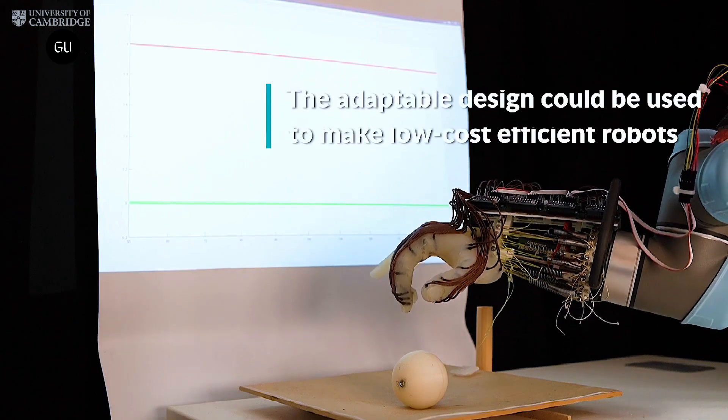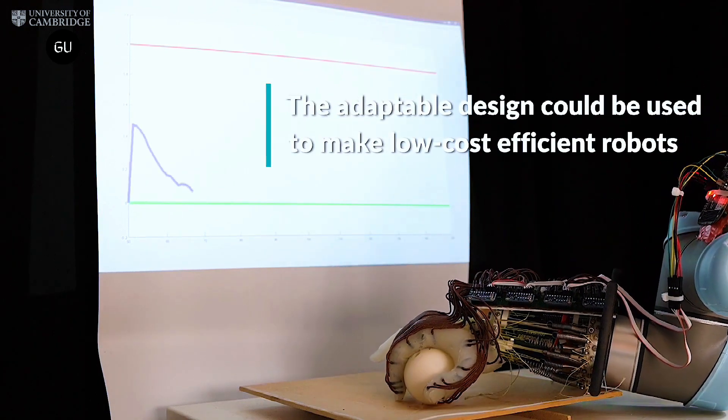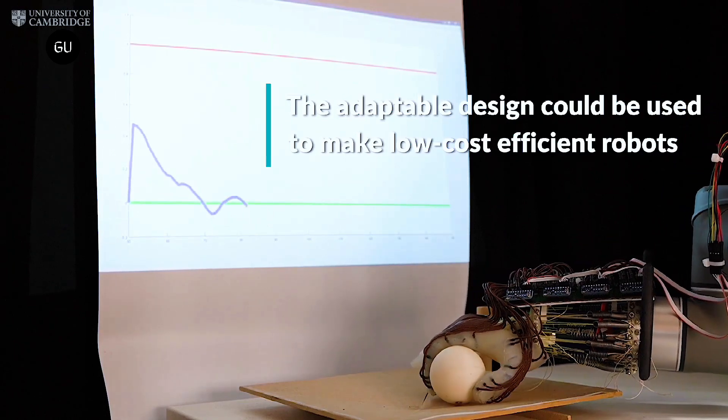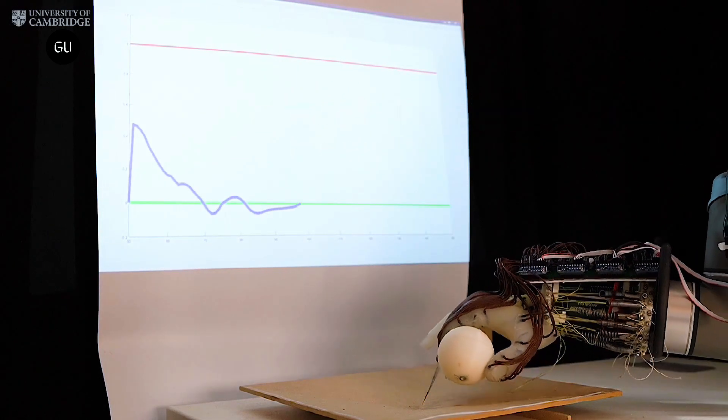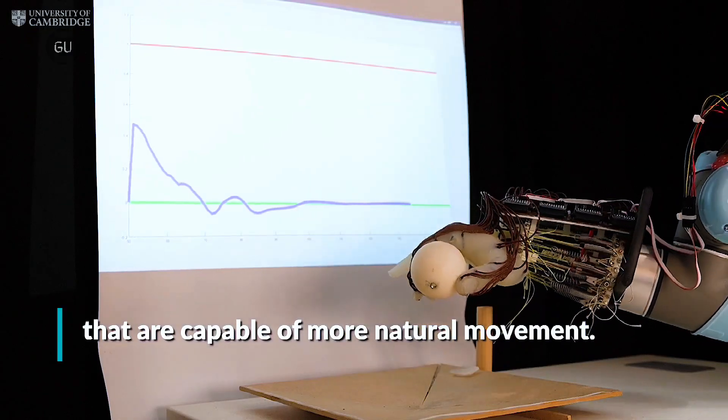The team is now working to improve the robot hand's accuracy and speed and exploring new applications for the technology. They are also developing a more advanced version of the hand that can sense and respond to changes in its environment, such as temperature or humidity.